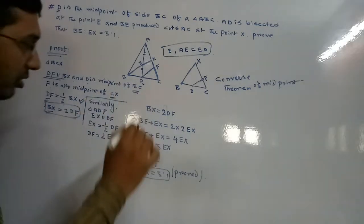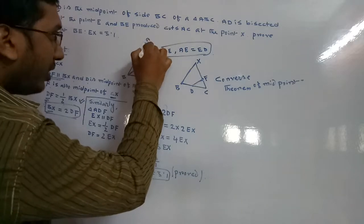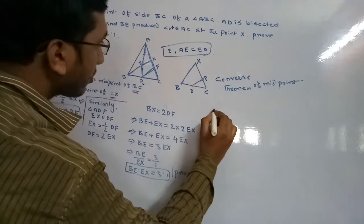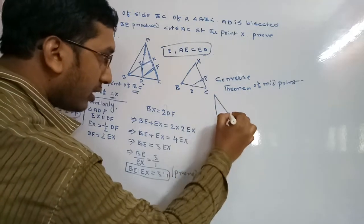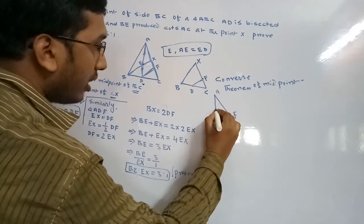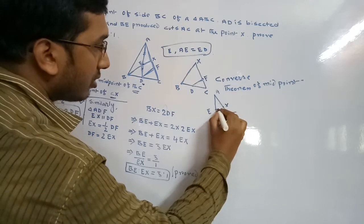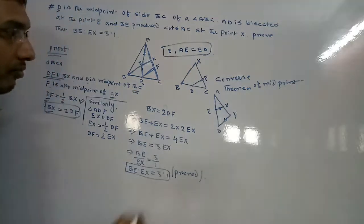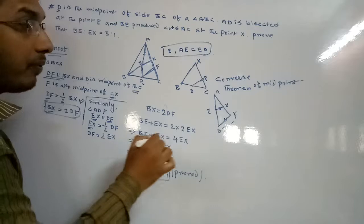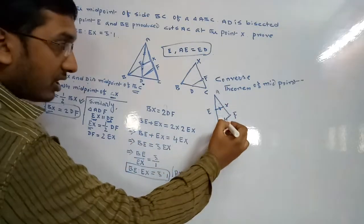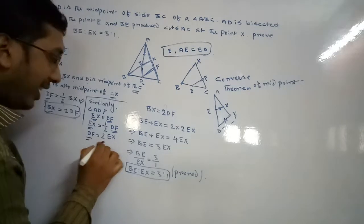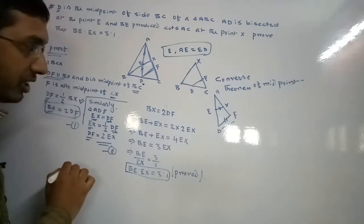Now look at triangle ADF. In that triangle, E is the midpoint of AD. So EX is parallel to DF. By the midpoint theorem, EX equals half of DF. Therefore DF equals 2 times EX. This is our second condition.